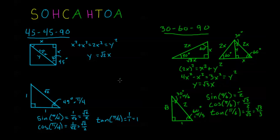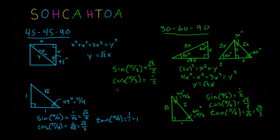Now for the π/3 angle: sine of π/3 = opposite/hypotenuse = √3/2. Cosine of π/3 = adjacent/hypotenuse = 1/2. Tangent of π/3 = opposite/adjacent = √3/1 = √3.